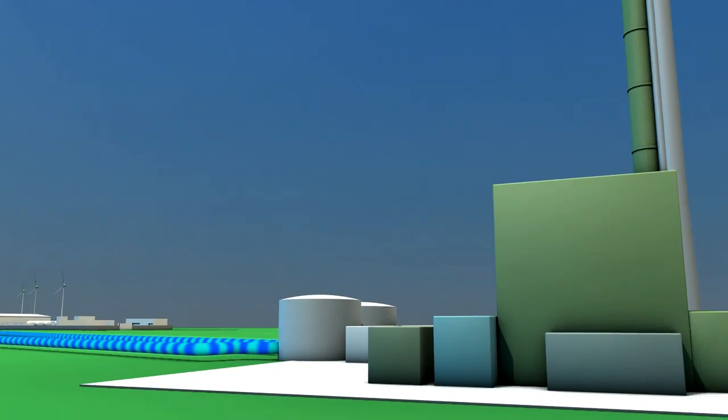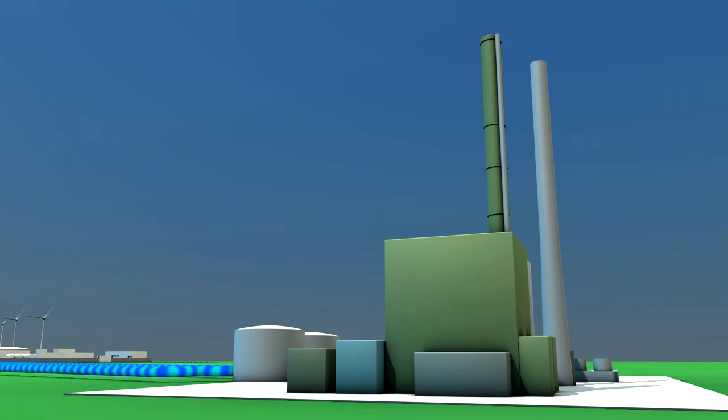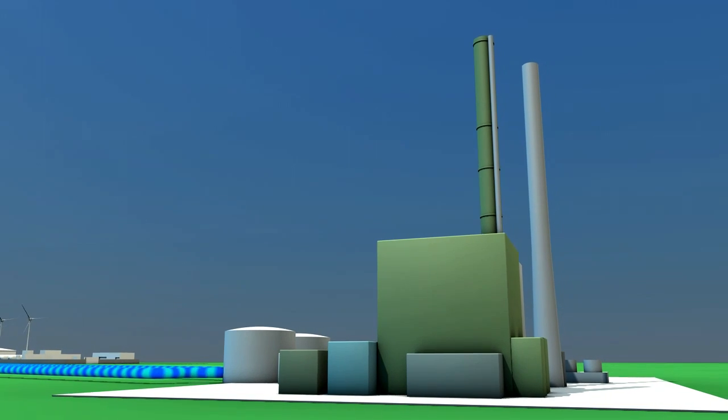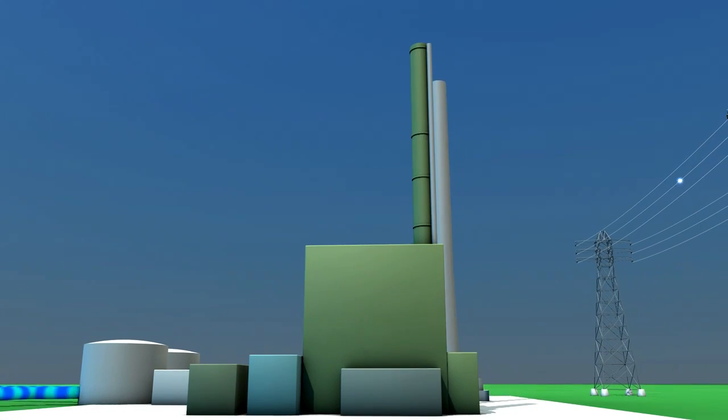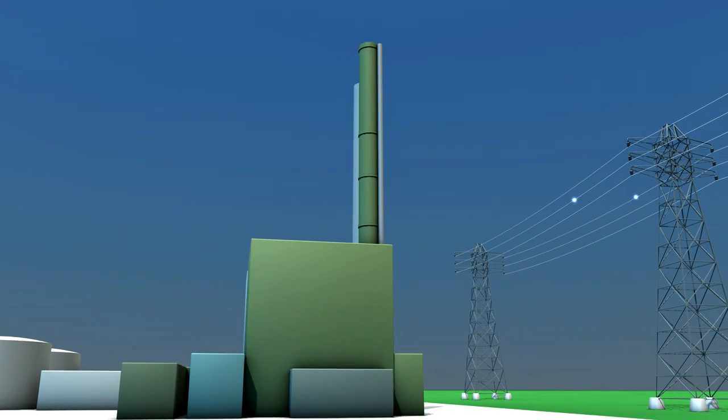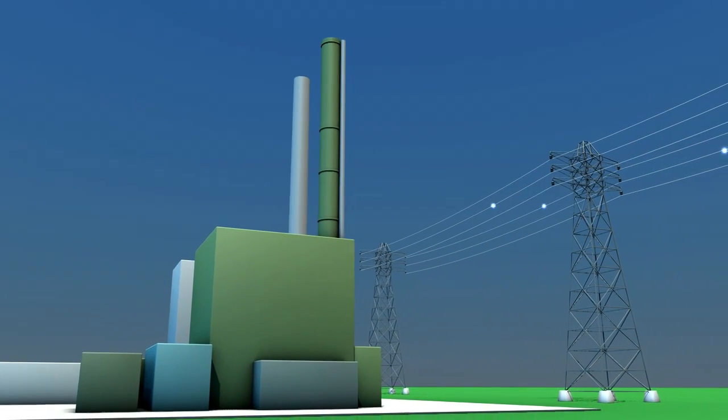As a further possibility, the wind-made gas can be injected into the natural gas feed line of the modern combined cycle gas power plant in Mainz, where it can be used for power generation together with natural gas.